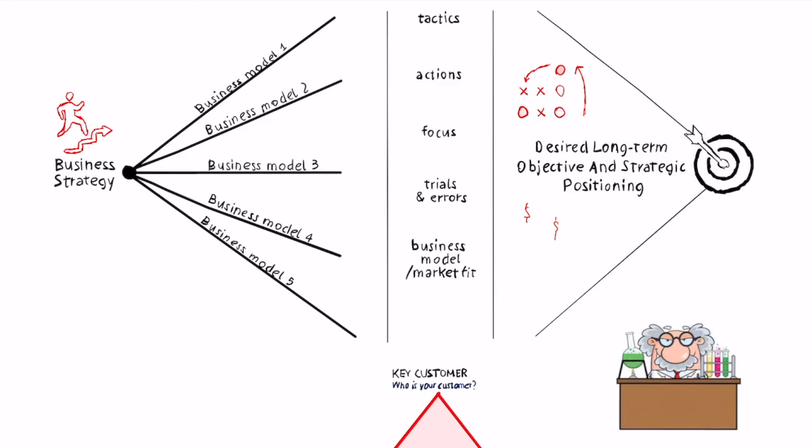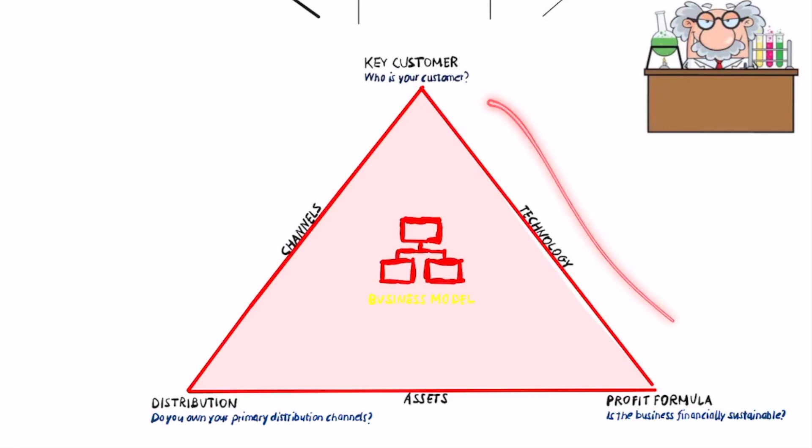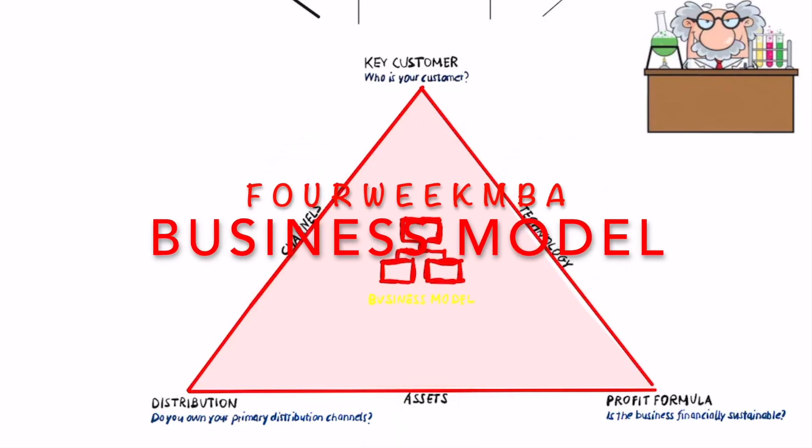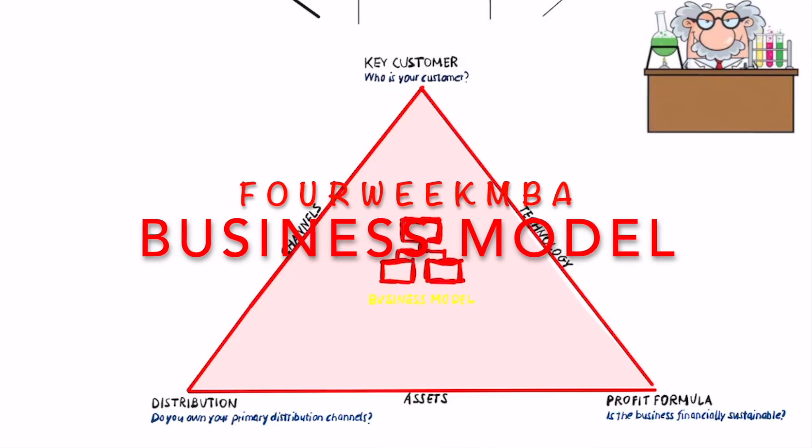So business model innovation, again, starts by understanding key customers, but then it moves in different dimensions that go from distribution and its profit formula by combining things like technology, the key channels to reach customers and the key assets that will be at the foundation of the business in the first place.